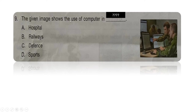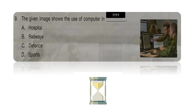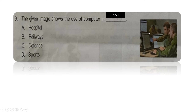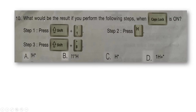Next question: the given image shows the use of a computer in which field? Option A: hospital, option B: railways, option C: defense, or option D: sports. Looking at the image, these are army men looking into a computer for information or maps. So the right answer is option C: defense.